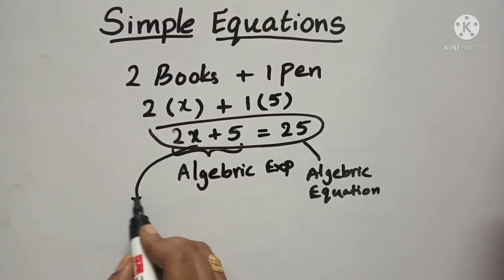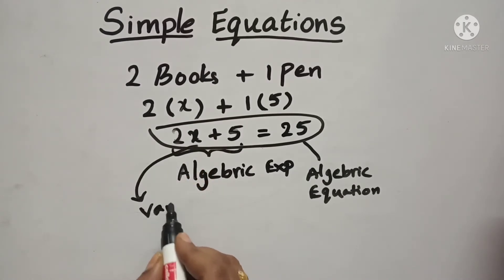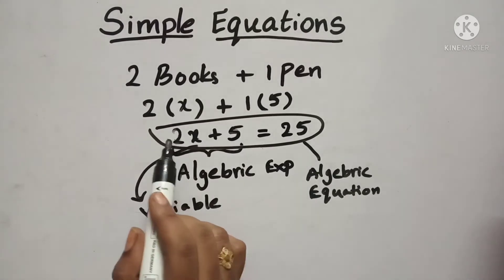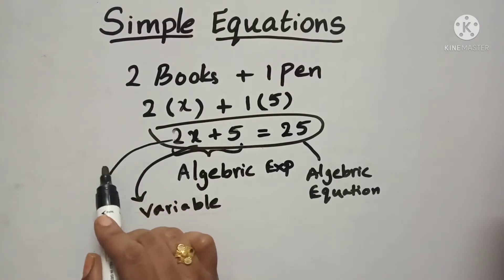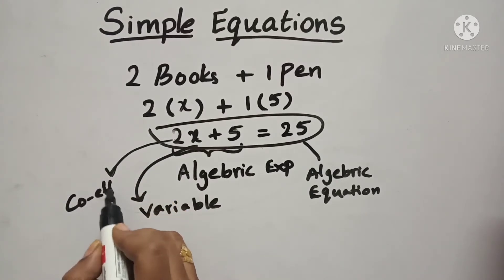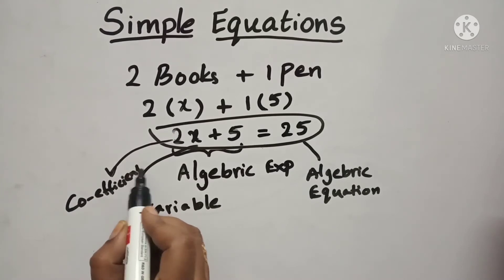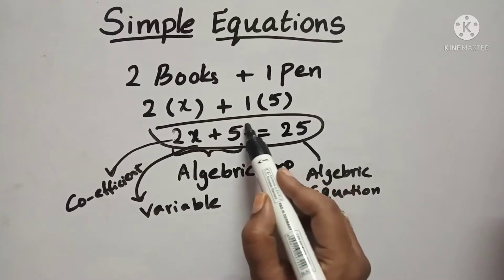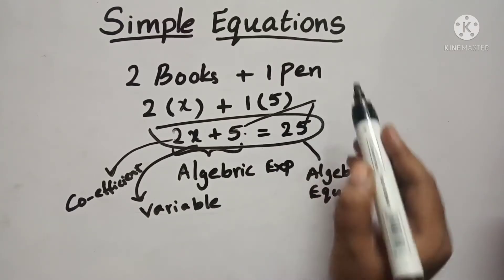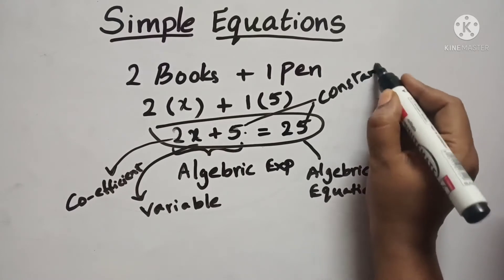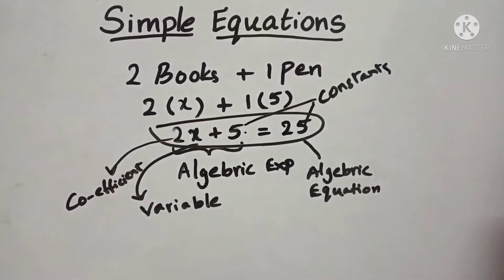Here, X is called a Variable. The number 2 is called the Coefficient. And the values 5 and 25, which are fixed numbers, are called Constants.